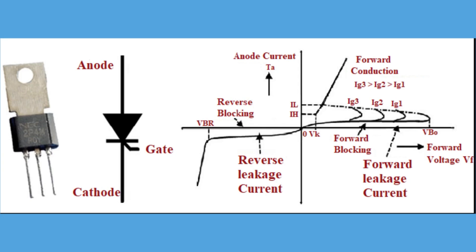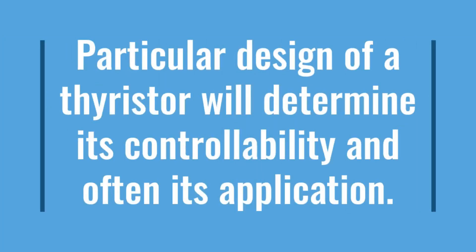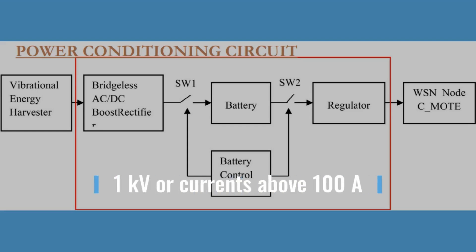Some thyristors are also controllable in switching from forward conduction back to a forward blocking state. The particular design of a thyristor determines its controllability and often its application. Thyristors are typically used at the highest energy levels in power conditioning circuits because they are designed to handle the largest currents and voltages of any device technology.